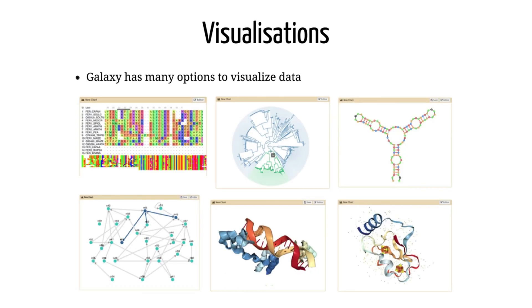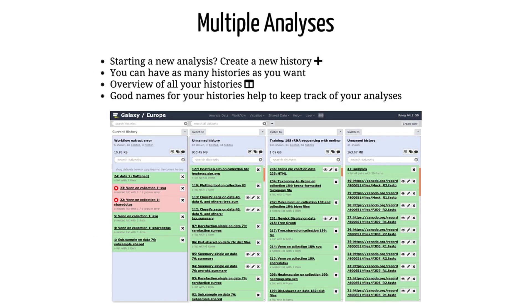Galaxy offers several ways to visualize your datasets depending on their format. For example, protein PDB data can be seen in a 3D viewer. When you want to start a new analysis, create a new history using the plus icon at the top of the history panel.